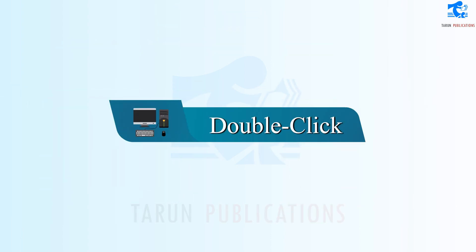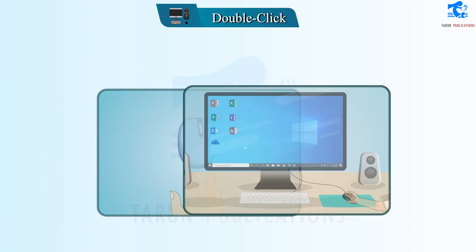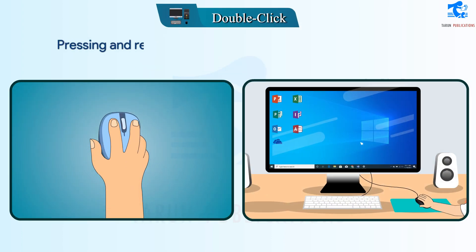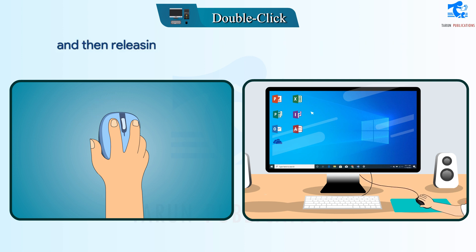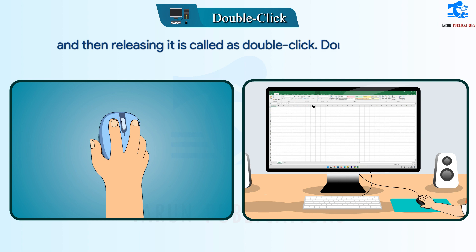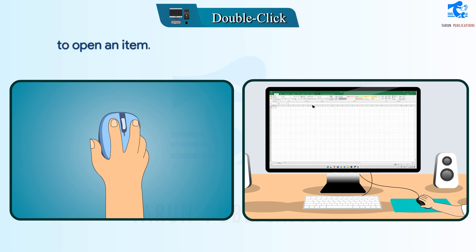Double click: Pressing and releasing the left mouse button twice very quickly is called a double click. Double click is used to open an item.